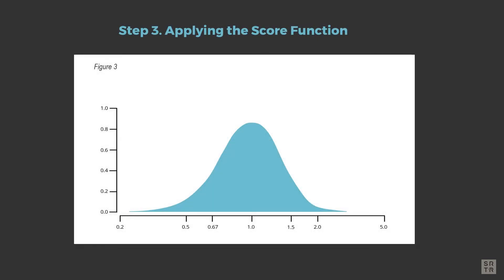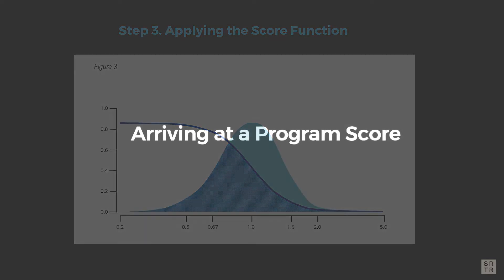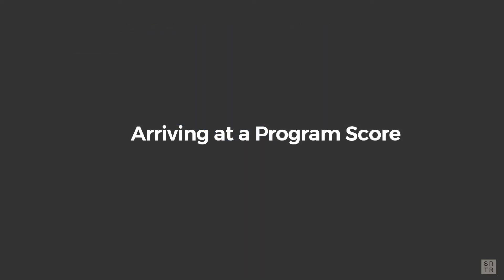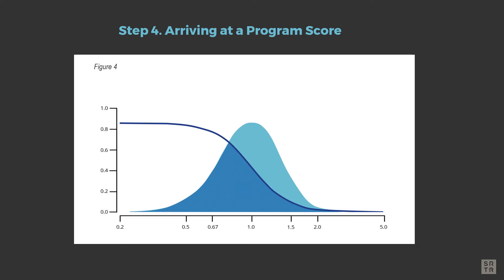Using the score function described in step 2, we arrive at a new bell-shaped curve by applying the score function across the range of the original bell-shaped curve for the program's hazard ratio. This is done by multiplying the value of the score function by the value of the bell-shaped curve along the full range of the curve. After applying the score function, we arrive at a new bell-shaped curve, and the area under this new bell-shaped curve is the program's score.